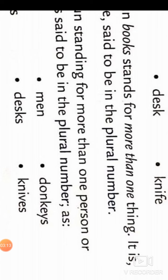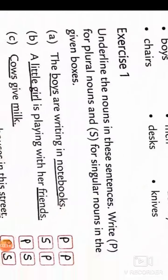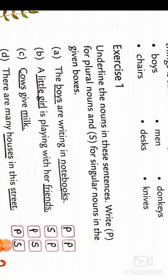Now exercise one: underline the nouns in these sentences. Write P for plural, S for singular. If plural comes first, we write P in the first box. If singular comes first, we write S in the first box.